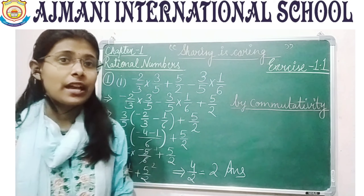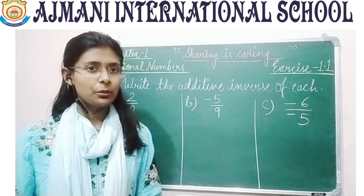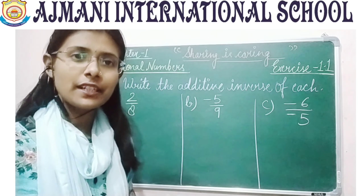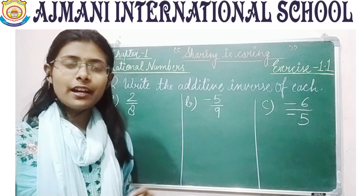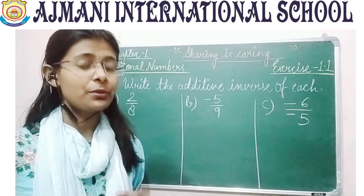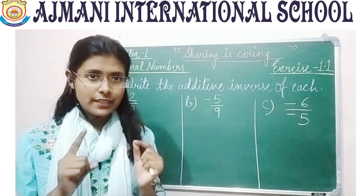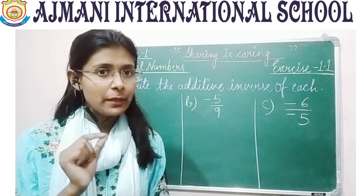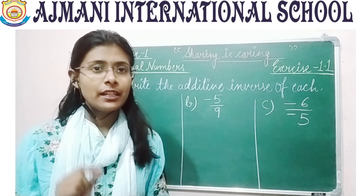I hope you understood — now do the B part by your own. Let's move to question number 2, which says write the additive inverse of each. I have taken the first three parts. The key concept: additive inverses are similar in figure but different in sign, meaning a positive number has a negative additive inverse.